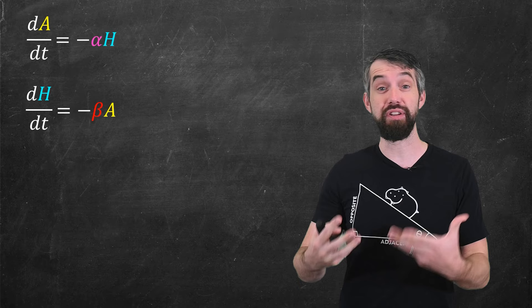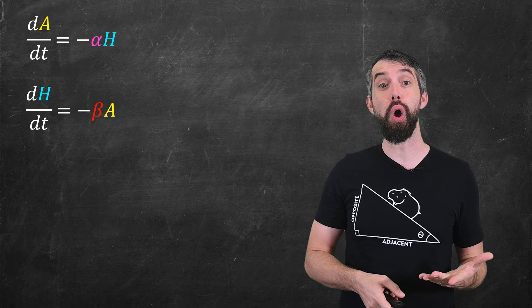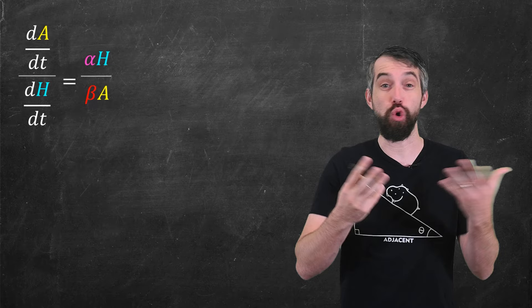So how can you solve such things? I want to show you one method first called eliminating the dependence on time. And what we're going to do here is just take a quotient of my two equations. I'll take the top equation, divide it by the bottom equation.